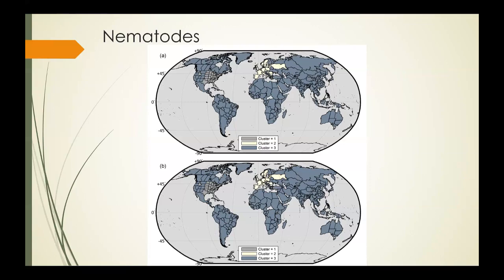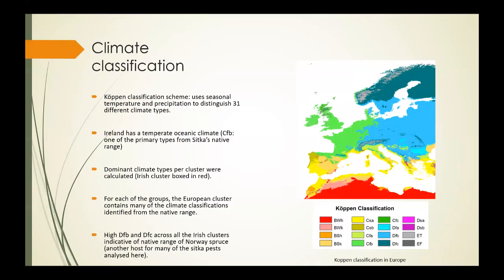The final part of the analysis involves a look at the climates of the clusters produced. Climate is inherently incorporated into the approach used here. To further investigate the relationship between the clusters produced and the typical climate for regions, the climate types for each of the clusters were assessed using the Köppen classification scheme.